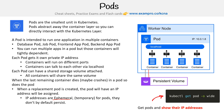To get pods and show their IP addresses, it's very common — you'll type in `kubectl get pods` and then do the `-o wide` flag.